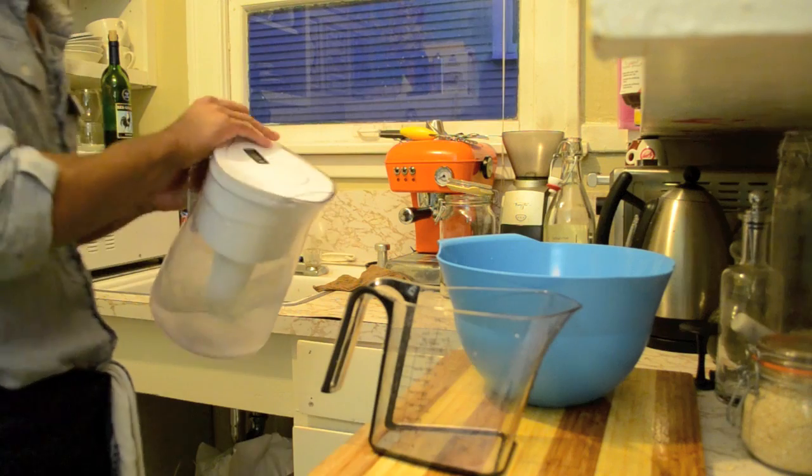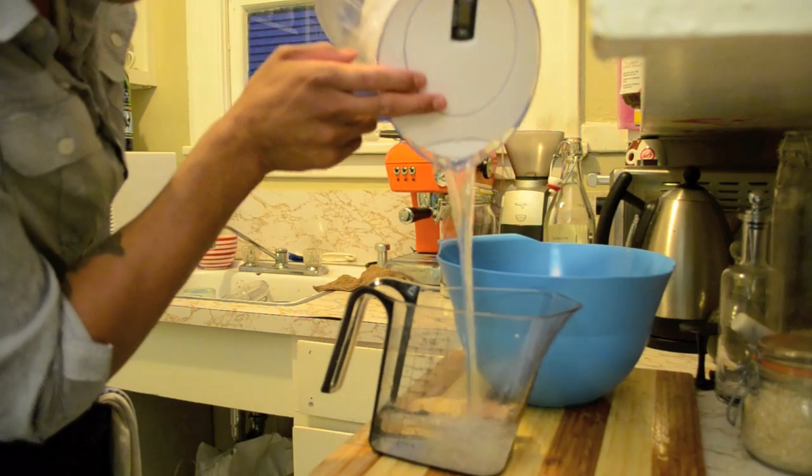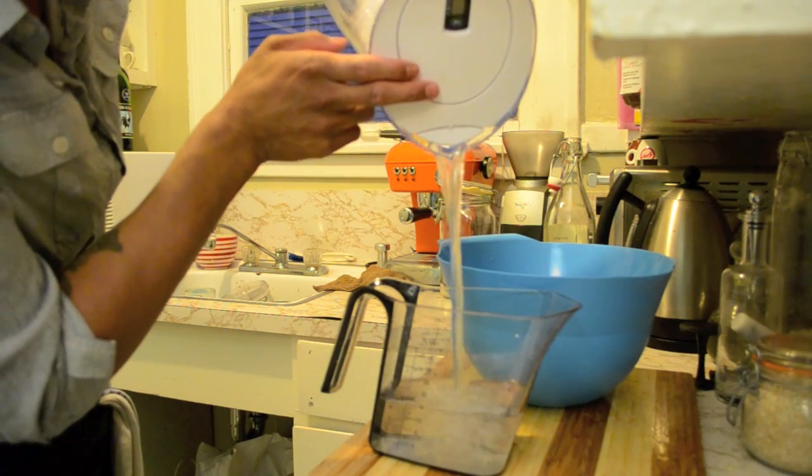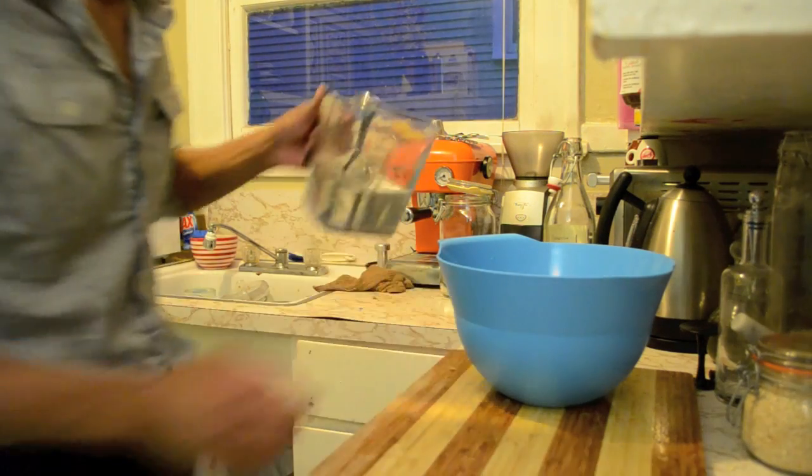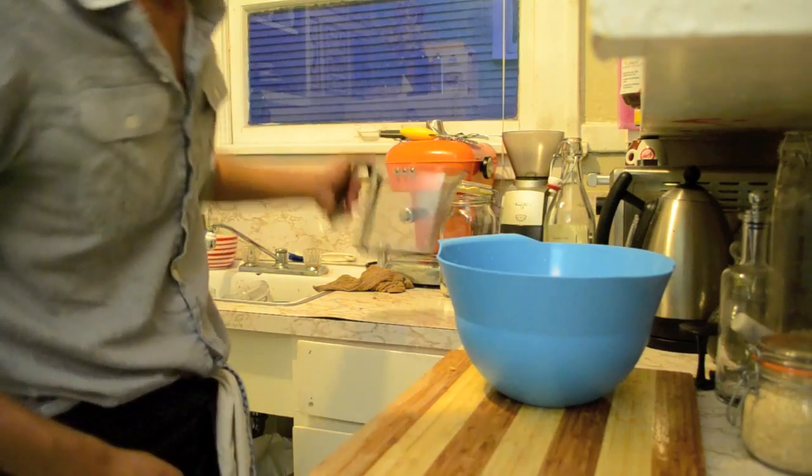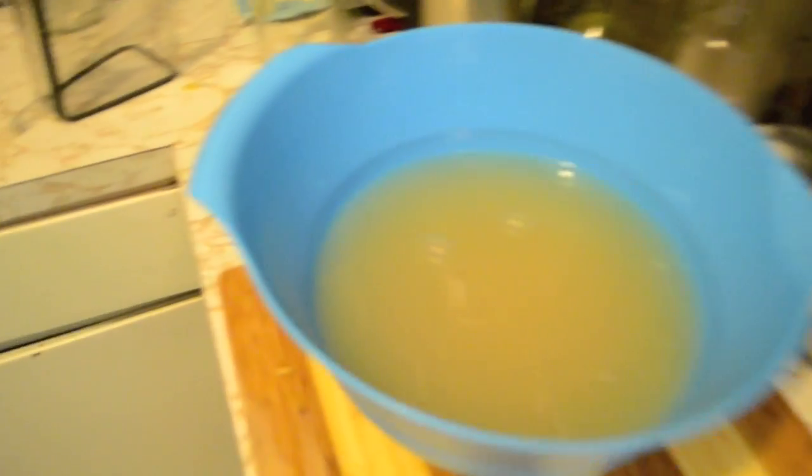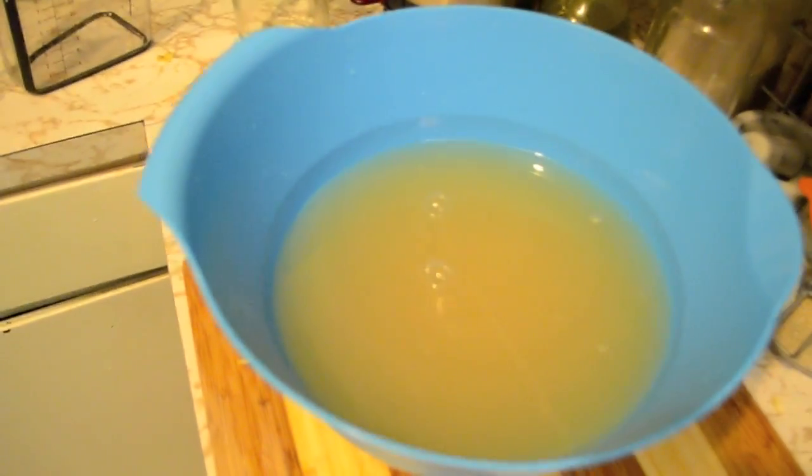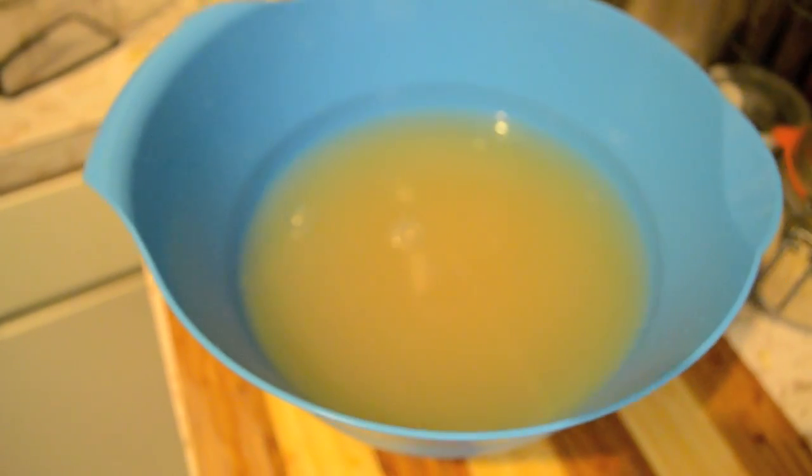I've already got 20 ounces in here. We're just gonna add 20 more ounces of very cold, very filtered water. Alright, so as you can see our ruby red ginger beer has now become normal looking ginger beer.